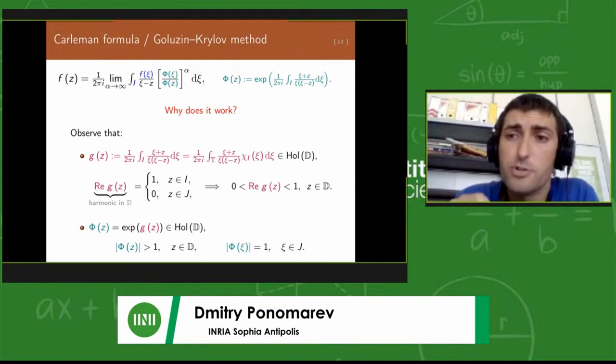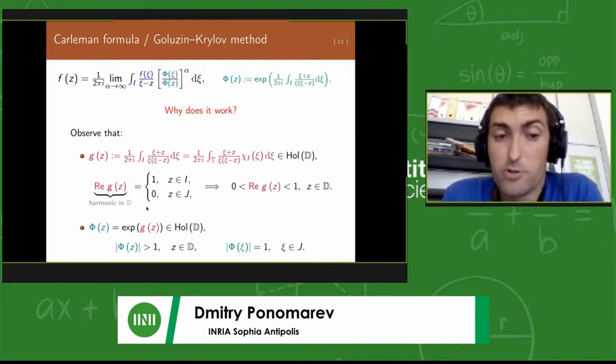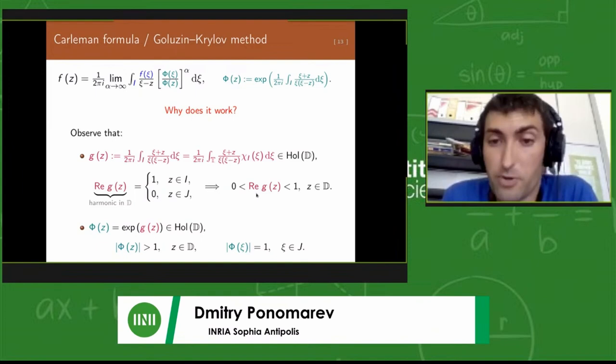This can actually be written as an integral of the Schwarz kernel against the characteristic function on the subset of the boundary of the unit circle i. The Schwarz formula reconstructs a holomorphic function in terms of its real values on the boundary. That means that this function g is holomorphic and its real part on the boundary is the characteristic function of i.